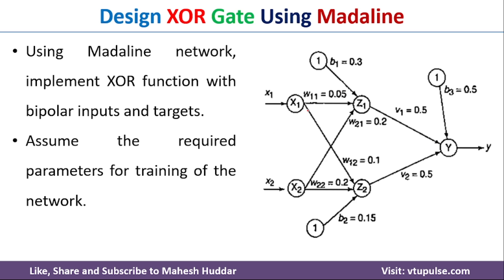We need to assume the required parameters — the hidden layer weights as well as the output layer weights. We will consider one input at a time and propagate it throughout the network to get the output at the output neuron. We will calculate the net input at each neuron, and the output will be calculated using an activation function, which is then fed as input to the next layer.